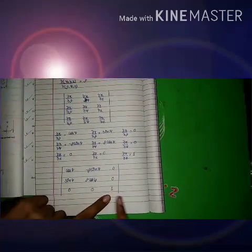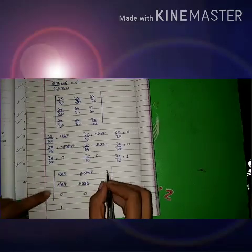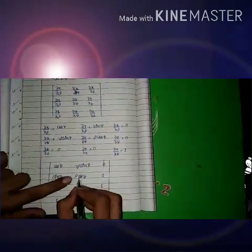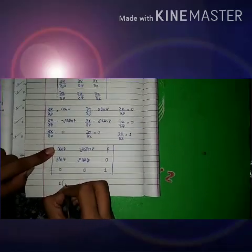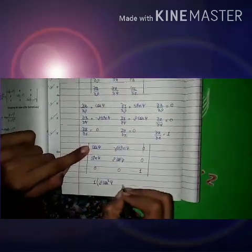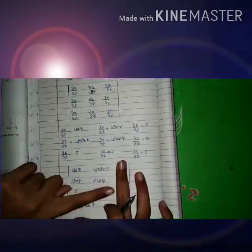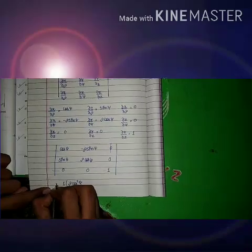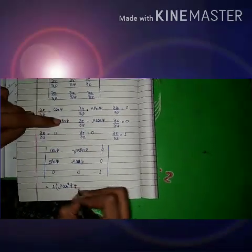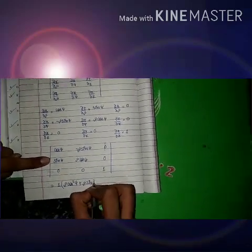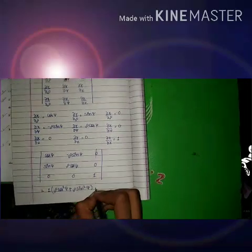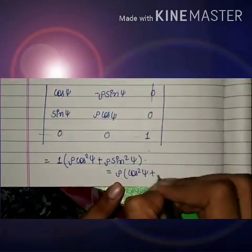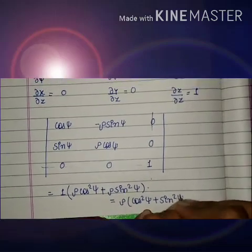Now we expand this determinant. Taking 1 from the third row along the third column, we drop that row and column. Multiplying the remaining 2×2 elements: cosψ × ρcosψ gives ρcos²ψ, and minus minus (−ρsinψ × sinψ) gives +ρsin²ψ. So the result is ρcos²ψ + ρsin²ψ, with ρ as a common factor: ρ(cos²ψ + sin²ψ).